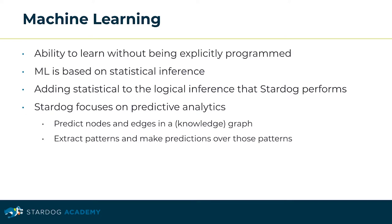Machine learning is based on statistical inference. Therefore, in Stardog we are able to add statistical inference on top of the logical inference that Stardog performs already. Stardog machine learning capabilities focus on predictive analytics, providing capabilities to predict nodes and edges in the knowledge graph and extract patterns and make predictions over those patterns.